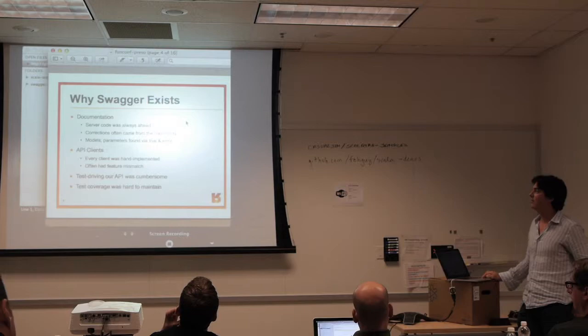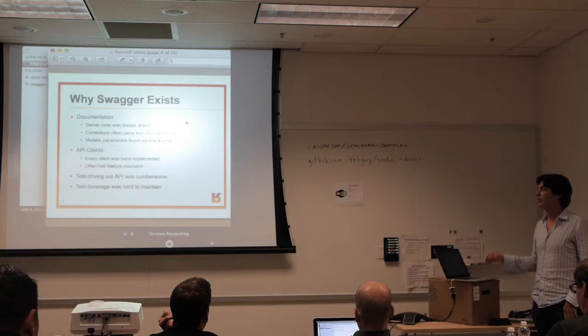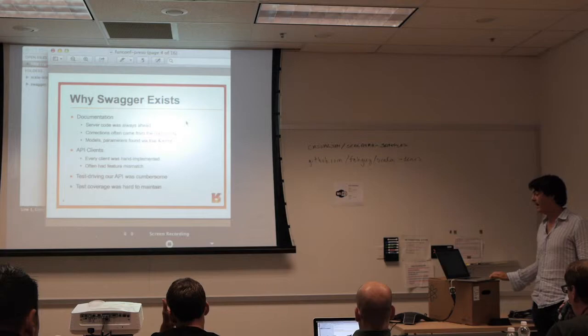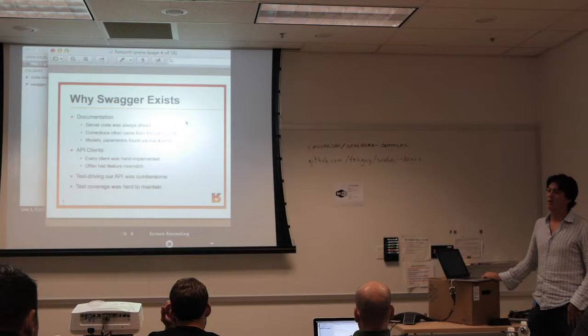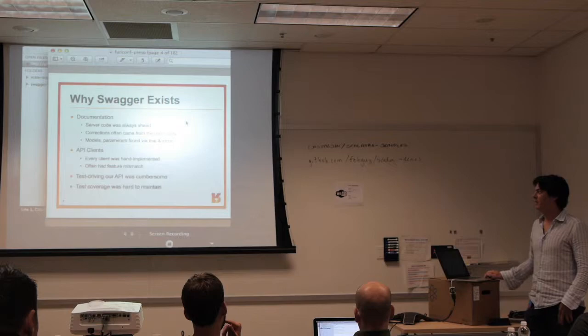API clients were another problem — we would have to hand-craft every client that we wanted to talk to an API. If we made a client for a partner, I'd have to go create a new Scala client, a new Objective-C client, a new JavaScript client every time I added something new. Sometimes those clients across different languages would be feature-mismatched — we'd update the Python library but not the Ruby one, and then the Ruby guys would be upset.